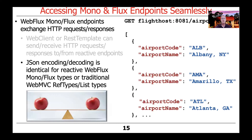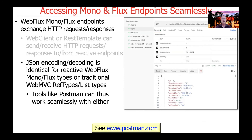Another important thing to understand: the JSON encoding and decoding is identical for reactive WebFlux Mono and Flux types, or the more traditional WebMVC types like List and Map. If you make a request, you get back identical JSON. It's the implementation that processes the incoming data that differs, not the actual information sent between client and server. As a consequence, standard tools like Postman can work seamlessly with either reactive types or traditional Java collections — nothing has to change in the way you use those tools.